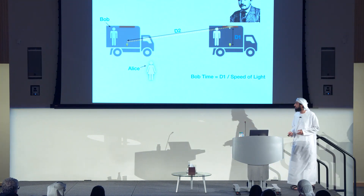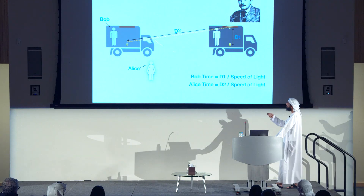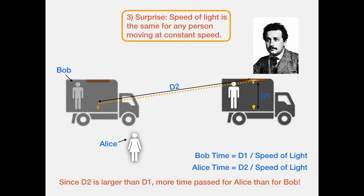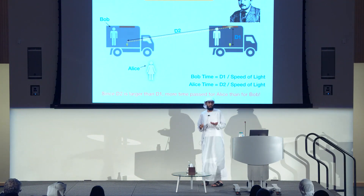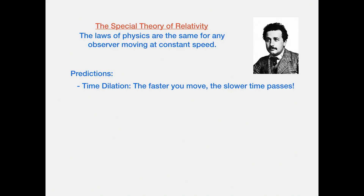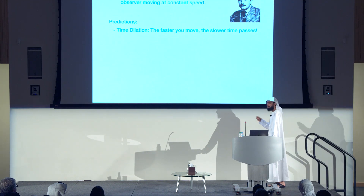This is the special theory of relativity: a statement that the laws of physics are the same for any observer moving at constant speed. What we just discussed is called time dilation — the fact that the faster you move, the slower time passes. And this is a real thing.